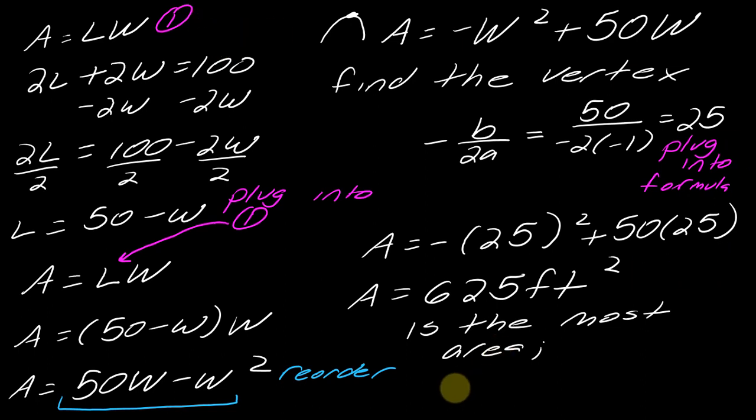Now, just to add on one other thing, what would be the dimensions of this? Well, the width would be 25, right? So this part here, if I'm plugging it into this formula, 25 would be going in for the W. So the width is 25. And then the length, so remember, this was our length equation. So I could just take 50 minus 25, so it would be 25 by 25. So my dimensions will be 25 times 25 in this case.